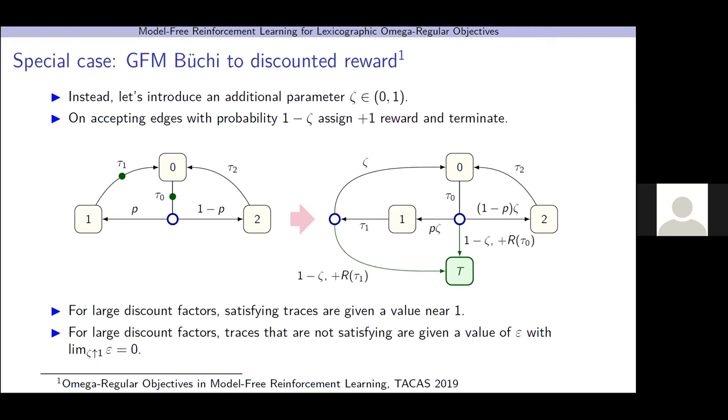For large discount factors, traces that are not satisfying are given a value of epsilon, where we can make this epsilon arbitrarily small by continuing to decrease the probability that we jump. So, satisfying traces are given a value near 1, traces that are not satisfying are given a value near 0. This is exactly what we want.